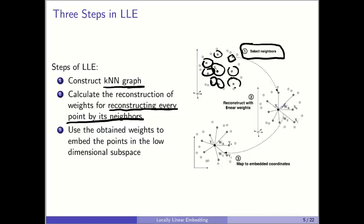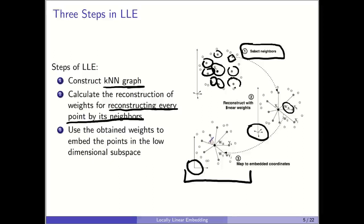We reconstruct every point using a linear combination: x_i equals a weighted sum of its k neighbors. We see how every point is reconstructed linearly by its nearest neighbors. Then in step 3, we come to the low-dimensional subspace. Here it was high-dimensional input data; in the low-dimensional subspace we use the same weights to construct every point, but in the low-dimensional space, not the original space. This is the idea of LLE — it is a local, piecewise embedding.